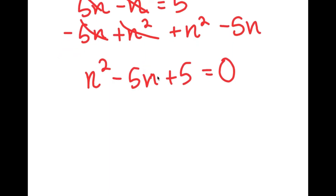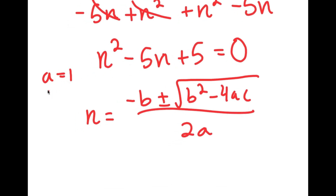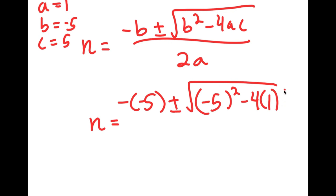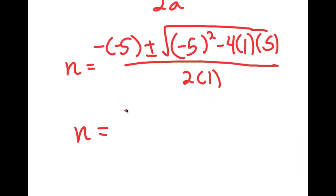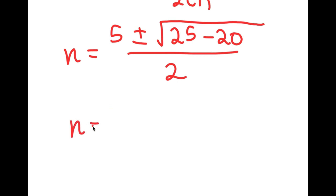To solve this, I can use the quadratic formula: negative B plus or minus the square root of B squared minus 4AC all over 2A. In this case, A is 1, B is negative 5, and C is positive 5. So N equals negative of negative 5 plus or minus the square root of negative 5 squared minus 4 times 1 times 5, all over 2 times 1. This equals 5 plus or minus the square root of 25 minus 20, all over 2, which is 5 plus or minus the square root of 5 over 2.